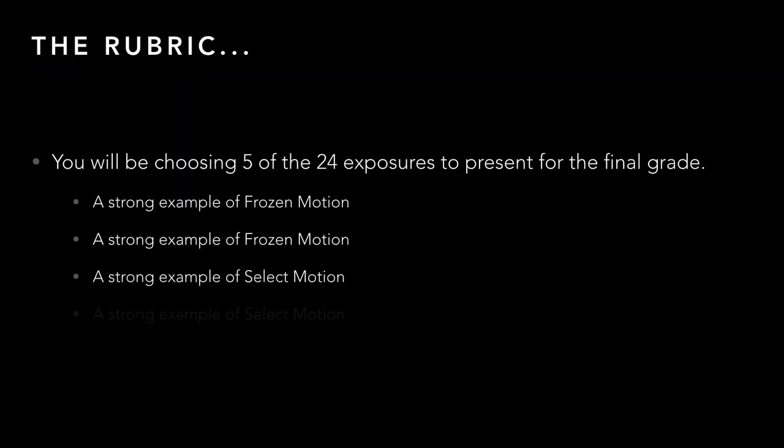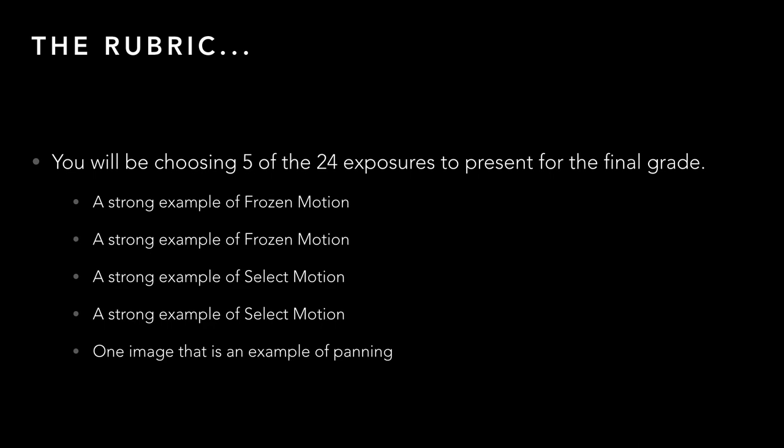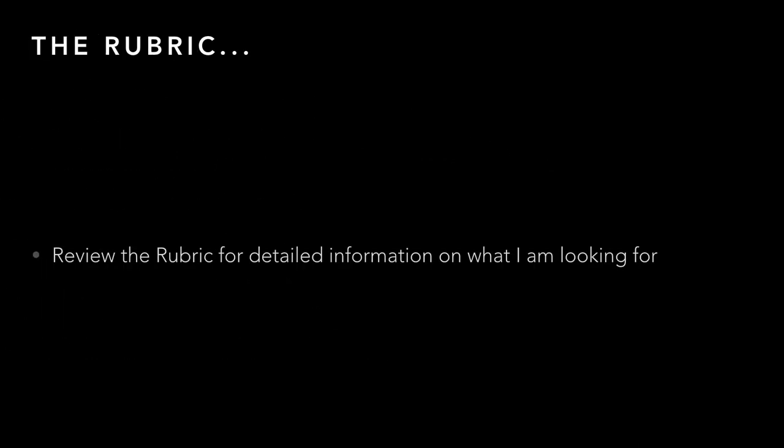You can look at the rubric — I have it attached. Out of your 24 minimum exposures, give me two strong examples of frozen motion that are both technically correct and well-composed. Same thing with select motion — two images where part of your subject is blurred. Then you need a minimum of one image as an example of panning. You could technically use three good pannings to fulfill both the select motion and panning requirements, but most people get about one panning if they're lucky. That's why we only require one. Look over the rubric and if you have any questions let me know.